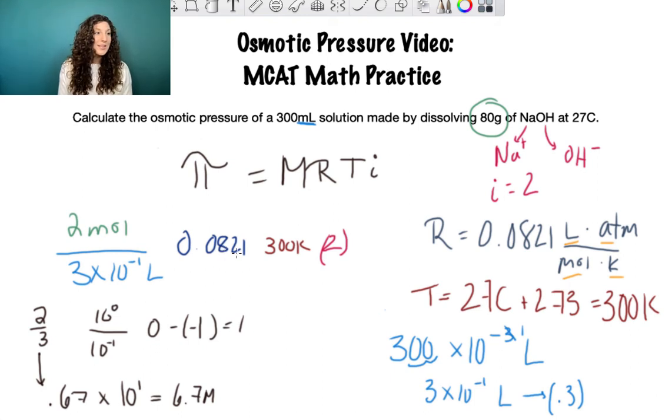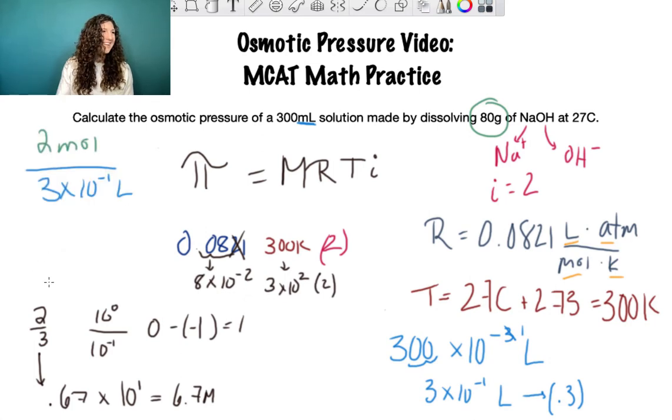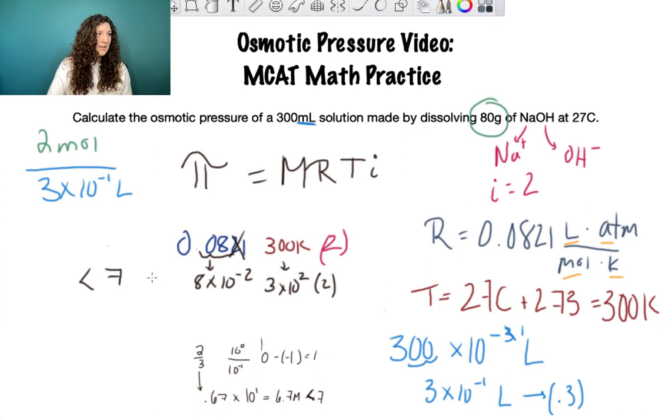Now let's handle the 0.0821. This is the MCAT, you'll have multiple choice, and they're going to be different enough numbers that you can round. So we'll take away the 21 and call this 0.08. I'll convert that into scientific notation: 8 times 10^-2. Same with 300, I'll do 3 times 10^2. And we have the value of 2 for i. Now we have 6.7 which we'll round to 7. Because we round up we know our real number will be a little less, so I put a less than sign.